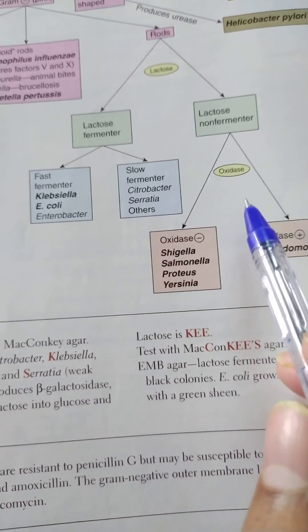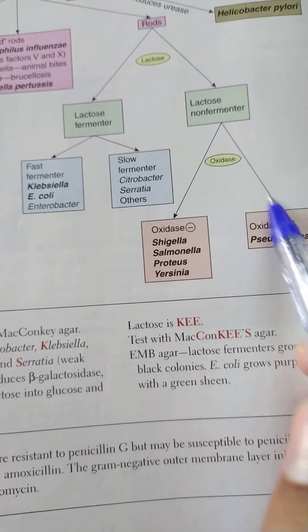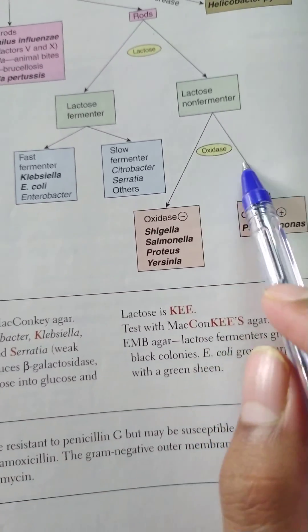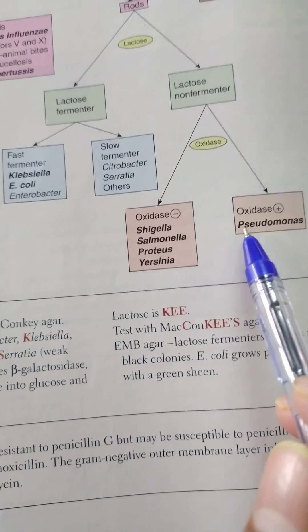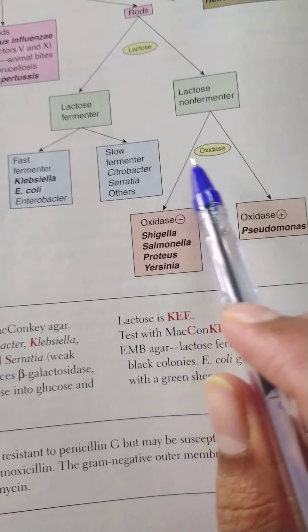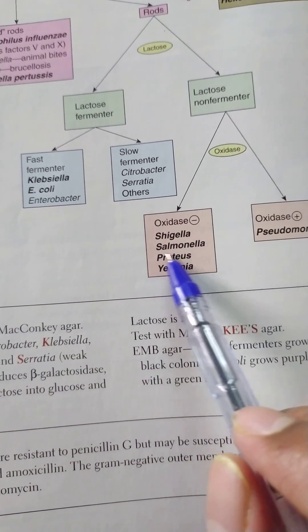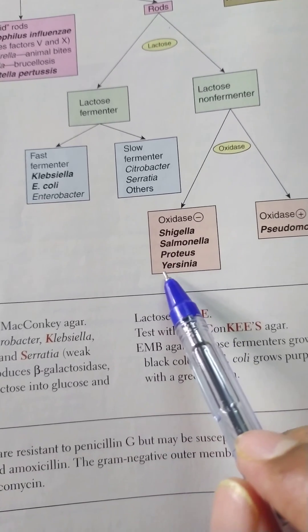Coming to the lactose non-fermenter, we again do the oxidase test. The one which is lactose non-fermenter and oxidase positive is nothing but the infamous Pseudomonas. And the oxidase negative includes many organisms like Shigella, Salmonella, Proteus, Yersinia, etc.